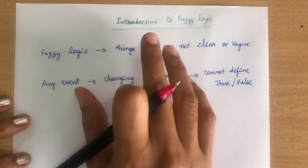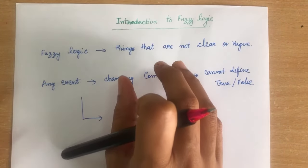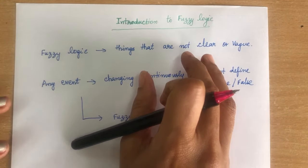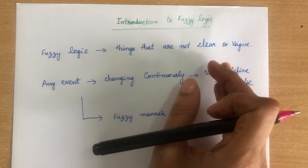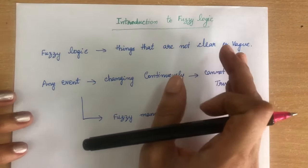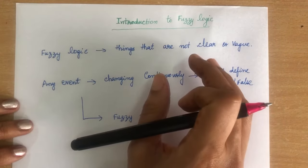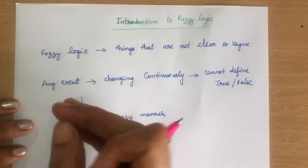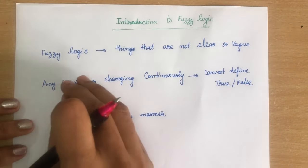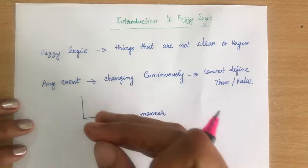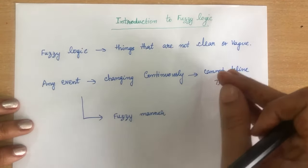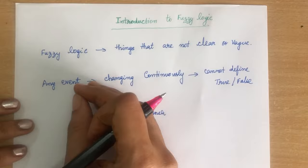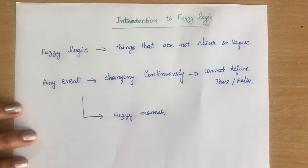Fuzzy means fuzziness. If a problem is not clear, vague, not precise, or ambiguous, then we can solve those problems using fuzzy logic. If any event is changing continuously and we cannot conclude whether it is true or false, we can solve those problems using fuzzy logic.